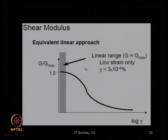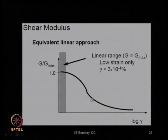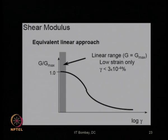In all practical cases, the dynamics of soil properties are not in the low strain range — they are in intermediate or high strain ranges. For example, earthquake engineering is a high strain problem, since after an earthquake there will be large displacements on the ground.